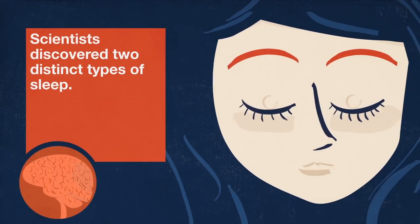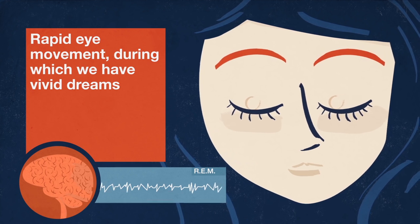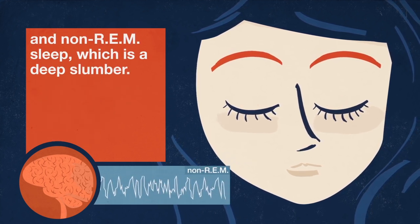Scientists discovered two distinct types of sleep. Rapid eye movement, during which we have vivid dreams, and non-REM sleep, which is a deep slumber.